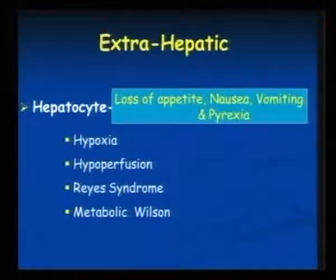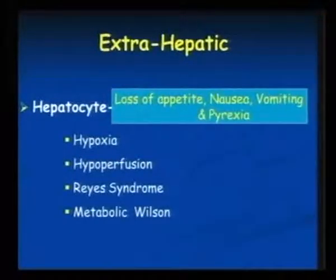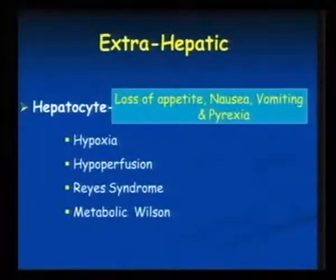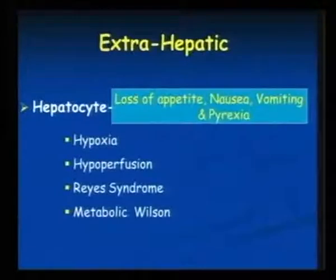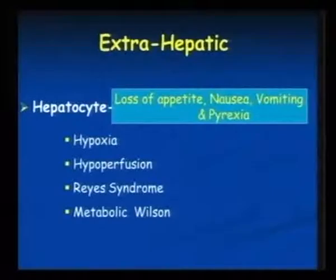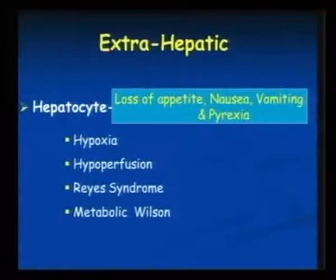As we discussed in our previous lecture, in dengue we can have RE cell involvement with a mild elevation of liver enzymes. You can also have a hypoperfusion injury in dengue decompensated shock syndrome — hypoperfusion injuries can cause elevation of liver enzymes in the thousands. In dengue fever alone, you can have SGPT and SGOT elevated in the hundreds. Like hypoxia, hypoperfusion, Reye's syndrome, and metabolic conditions like Wilson's — you can have hepatocyte involvement.